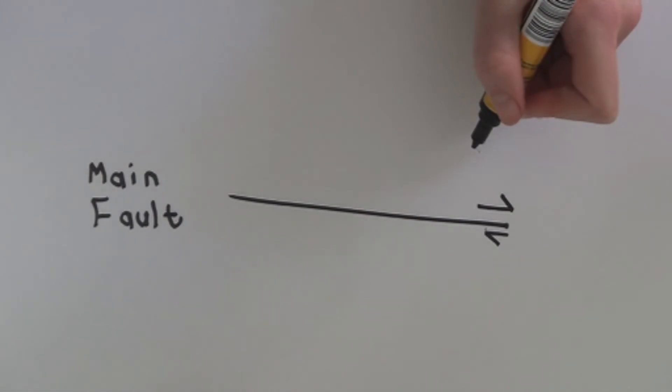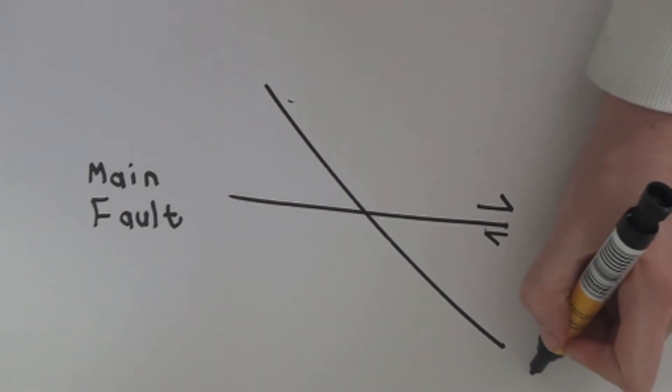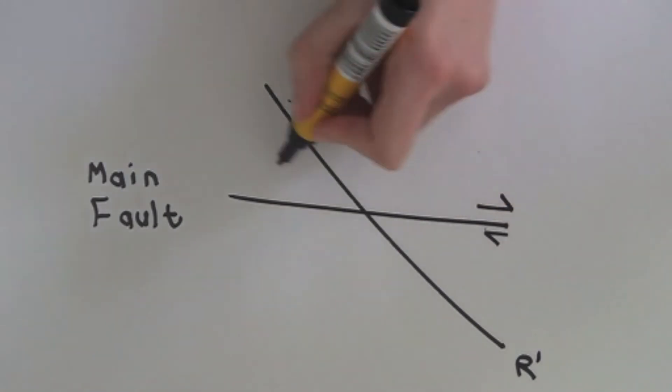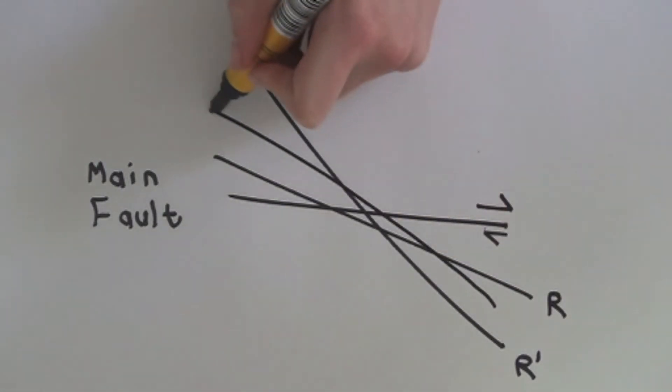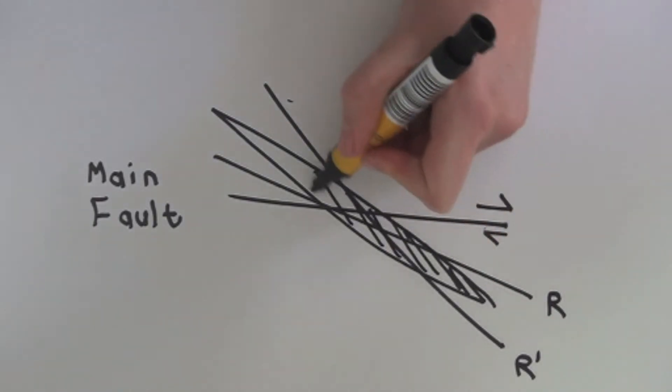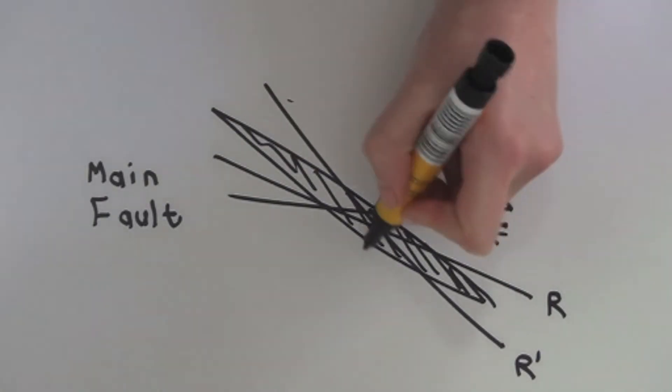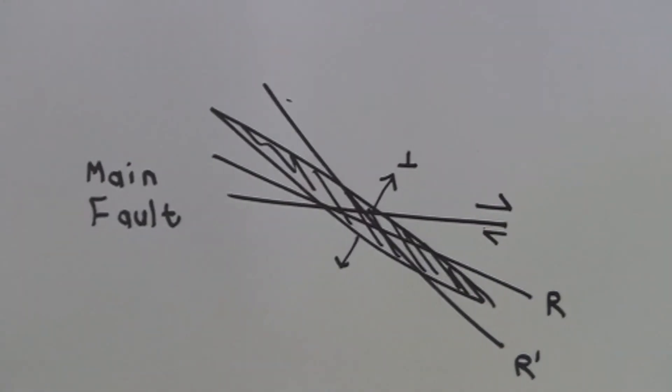The main types are R which make a high angle with the main fault and R' which makes a lower angle. You also get extensional fractures known as T-shears occurring. Both Riddell and T-shears dip in the direction of shearing and thus we can tell the shear sense in the fault.